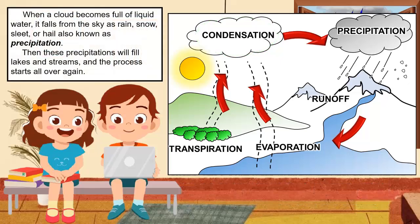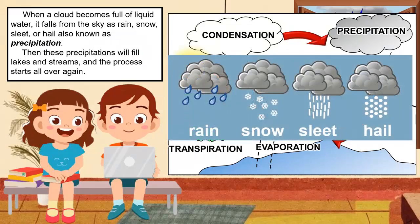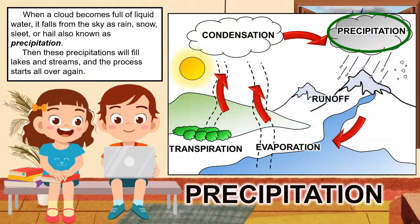When a cloud becomes full of liquid water, it falls from the sky as rain, snow, sleet, or hail — also known as precipitation. Then these precipitations will fill lakes and streams, and the process starts all over again.